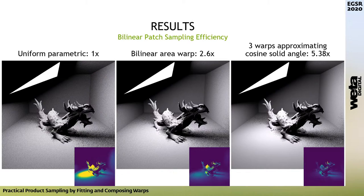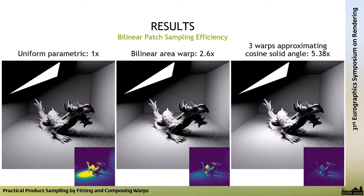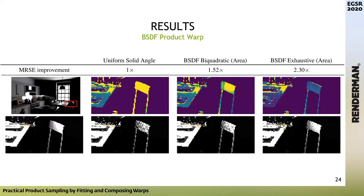Applying warp composition to sampling bilinear patches — where there is no known solid angle sampling method — the baseline is uniform parametric sampling. Composing one bilinear warp with the parametric warp to compensate for parametric stretch yields more than 2.5x speedup. Further extending the chain to approximate solid angle and cosine terms gives more than 5x efficiency improvement. This demonstrates that composing three or four warps can be effective, and provides a general recipe for approximating cosine-weighted solid angle sampling for arbitrary geometries.